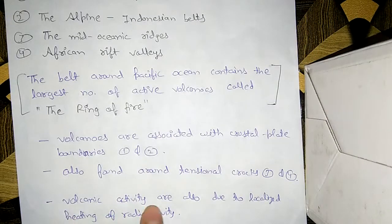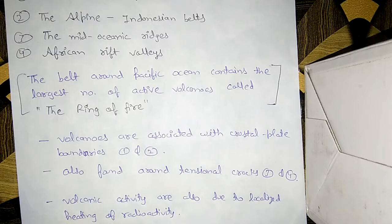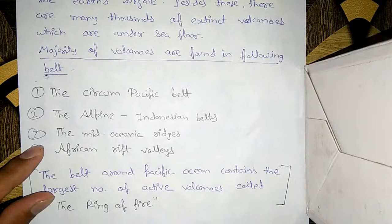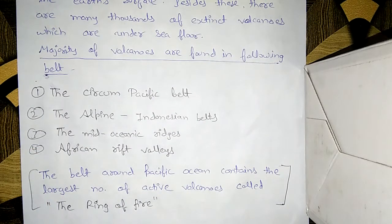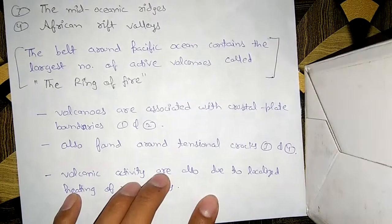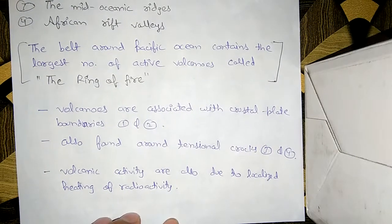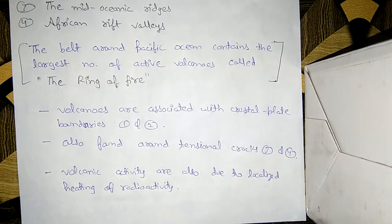The third and fourth belts — the Mid-Oceanic Ridges and the African Rift Valleys — are found around tensile cracks, which are cracks on the Earth's surface due to tensile force. Volcanic activity is also found due to localized heating from radioactivity, which enhances volcanic activity.